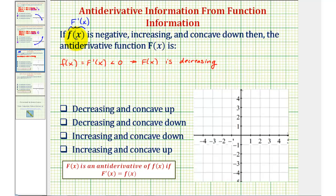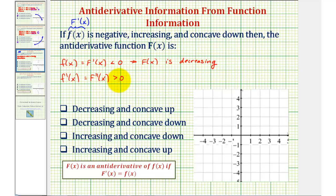Next, we're told that f of x is increasing. Well, if f of x is increasing, then f prime of x would have to be positive. And if f prime of x is positive, then big F double prime of x would also be positive. So f prime of x equals big F double prime of x, which we know is positive, and the second derivative indicates concavity. So because the second derivative of big F is positive, big F of x would have to be concave up.